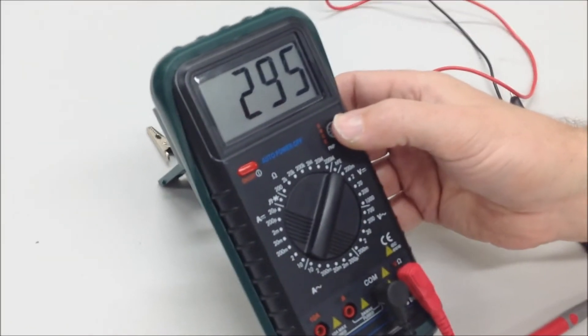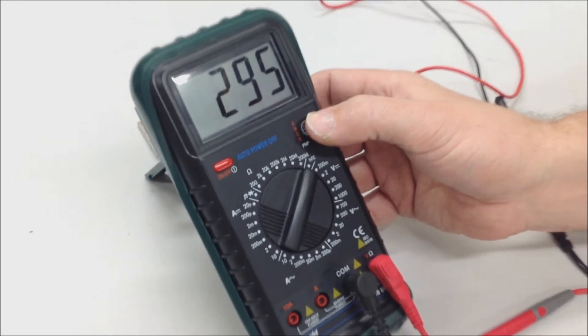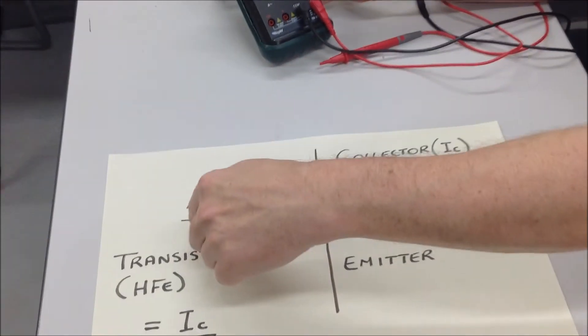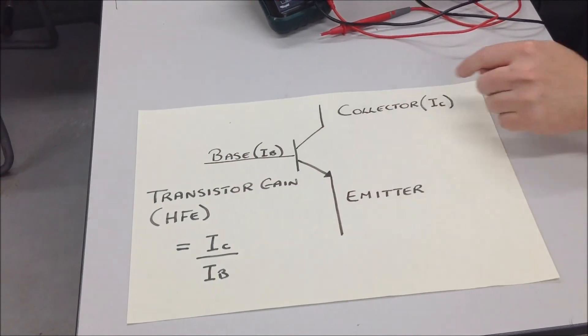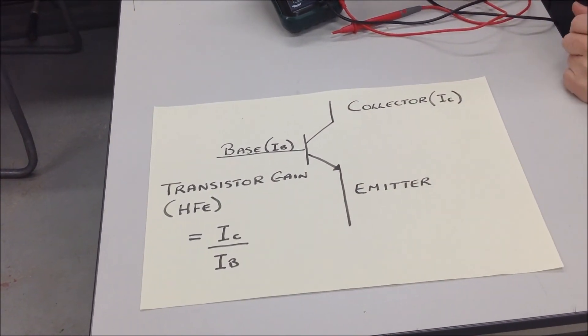Now, you press it in, and that tells you the gain of this transistor is 295. So, for every milliamp you feed into the base, you will get 295 milliamp at the collector up to the saturation point.